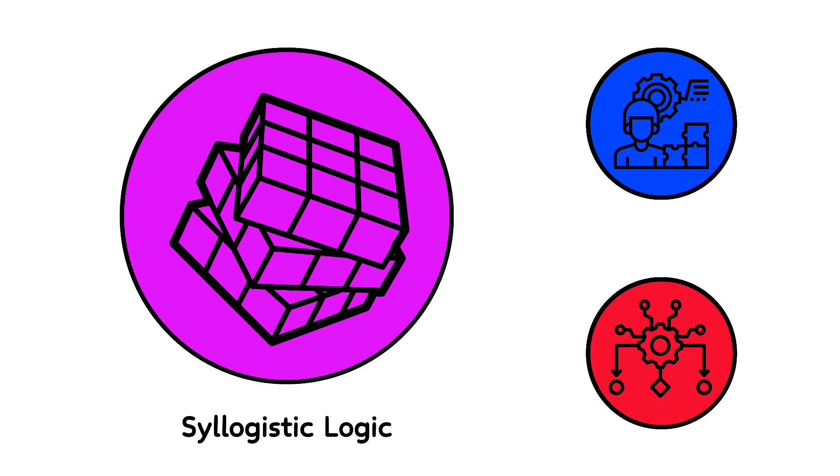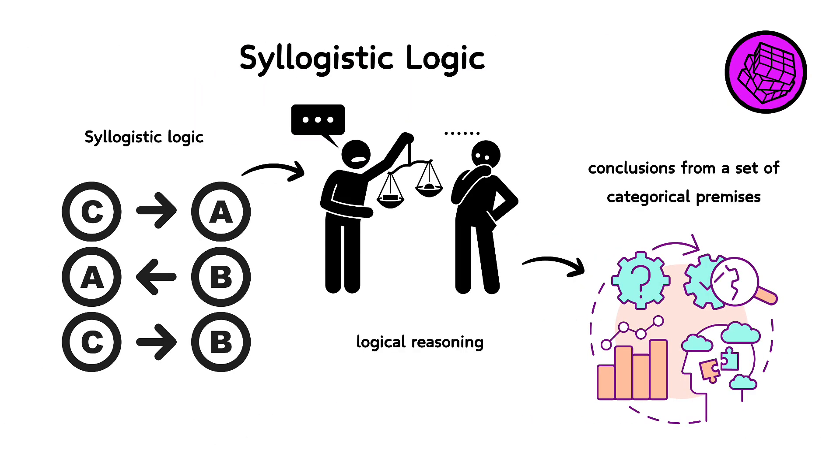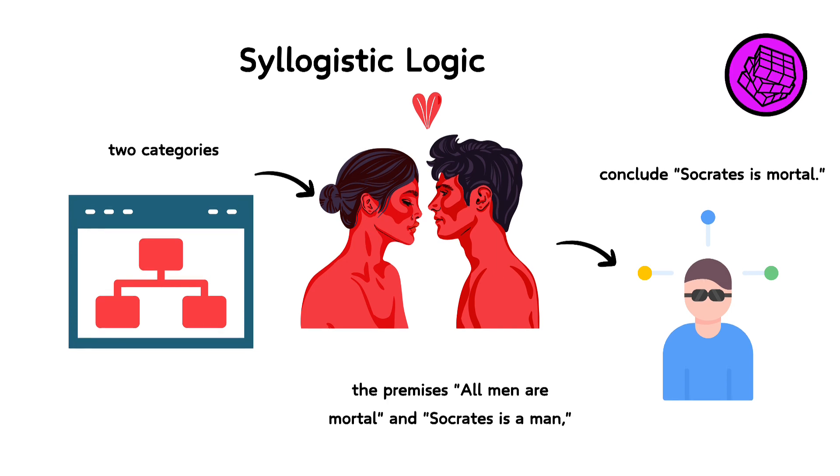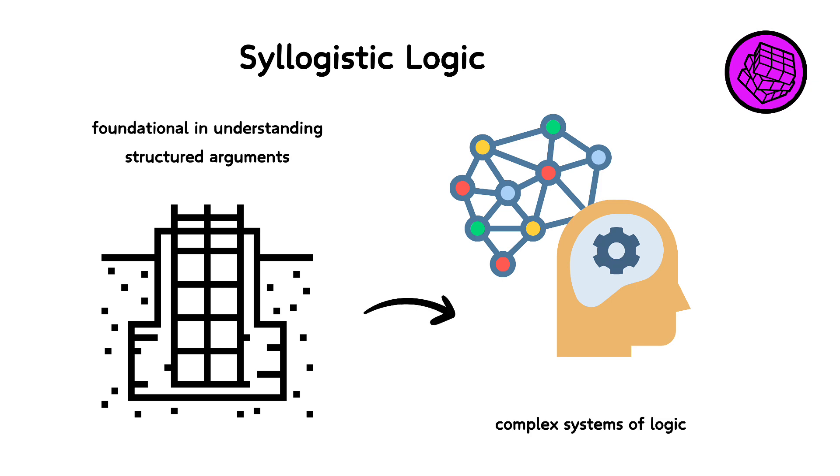Syllogistic logic, developed by Aristotle, is one of the earliest forms of logical reasoning. It involves deducing conclusions from a set of categorical premises. Each premise and the conclusion describe a relation between two categories using terms like all, none, or some. For example, from the premises all men are mortal and Socrates is a man, one can conclude Socrates is mortal. This form of logic is foundational in understanding structured arguments and is a precursor to more complex systems of logic used today.